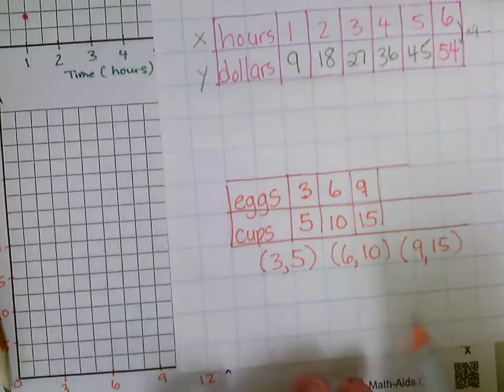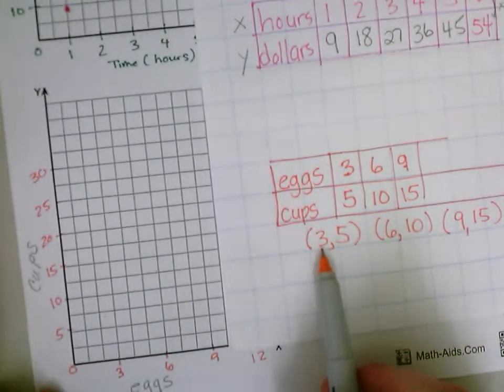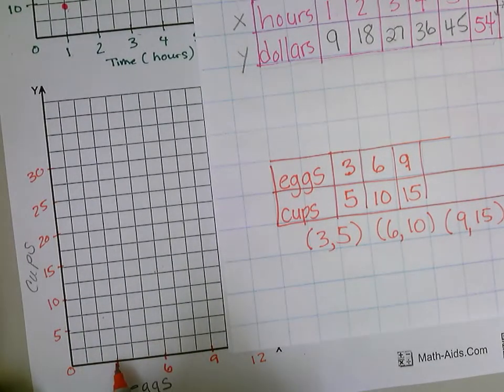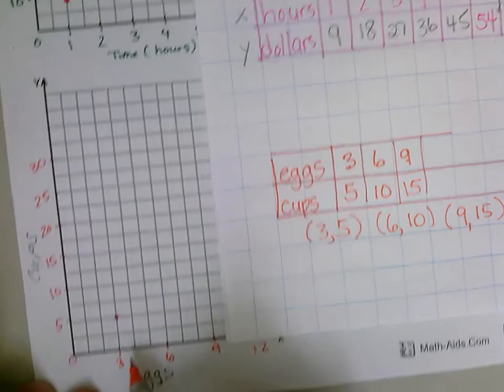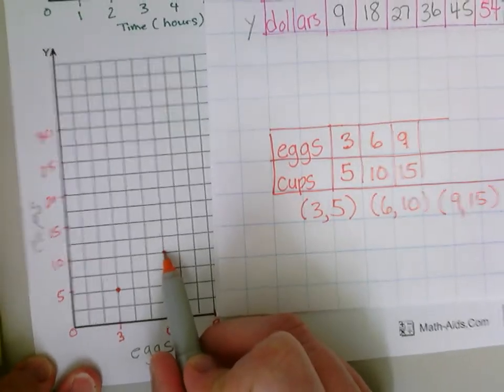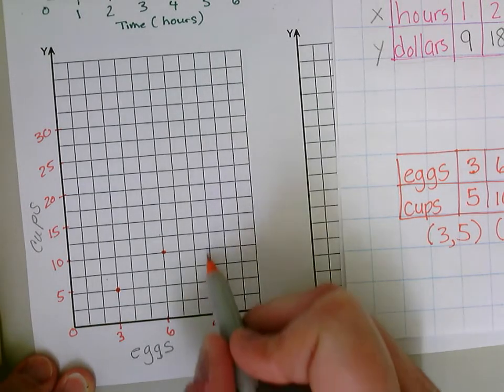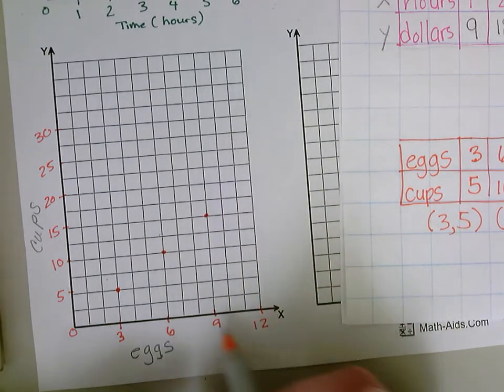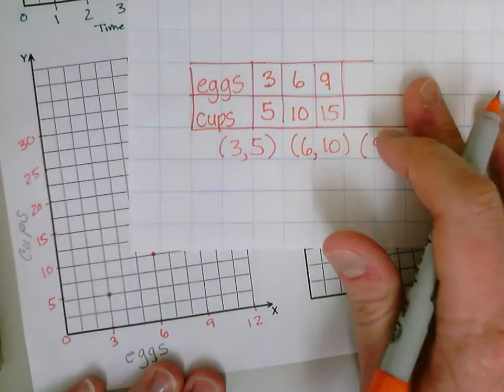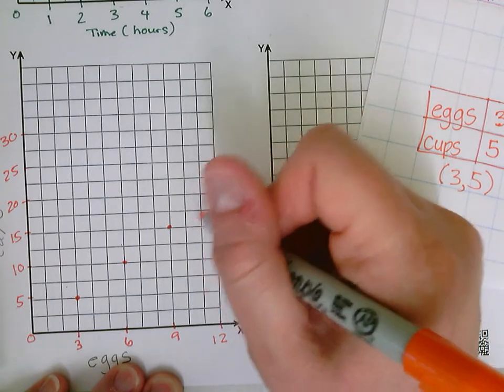Now I'm going to graph these ordered pairs onto my coordinate plane. The first one is three, five. I'm going to go over three and up to where the five is. My next one is six, ten. I'm going to go over six then up ten to where the ten is. Next I would go over nine to where the fifteen is. And if I kept going with my ratio table, my next would be twelve and I would go up to keep following.